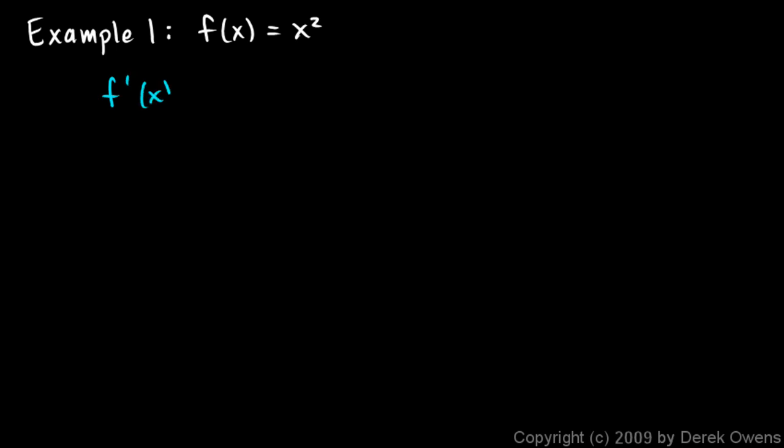f prime, which is what we're looking for, f prime of x will be the limit as delta x approaches zero of f of x plus delta x minus f of x over delta x. We're going to put in this function into this formula, and we're going to find a new function, f prime of x. The value of that function at any point x will be the slope of my original function at that point x.